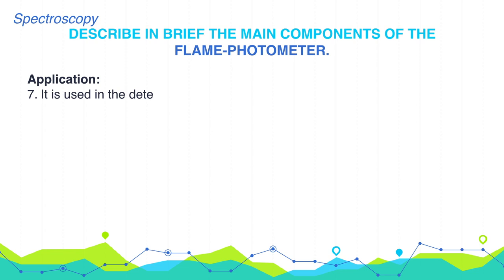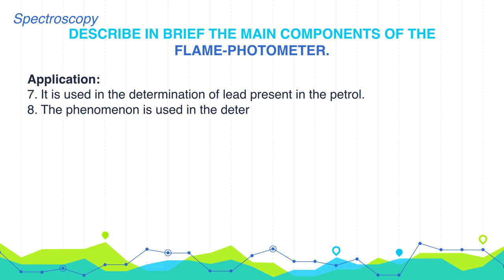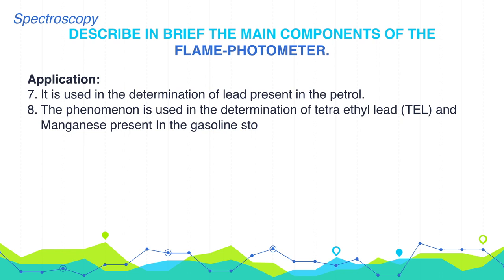It is used in the determination of lead present in petrol. The phenomena is used in the determination of tetraethyl lead and manganese present in gasoline stock. We can also determine the amount of boron present in an organic compound.